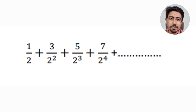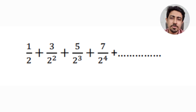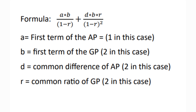Next is on AP-GP series. A typical problem has the numerator in AP — like 1, 3, 5, 7 — and the denominator in GP — like 2, 2², 2³. The formula for the sum is: (a · b)/(1 − r) + (d · b · r)/(1 − r)², where a is the first term of AP, b is the first term of GP, r is the common ratio of GP, and d is the common difference of AP.